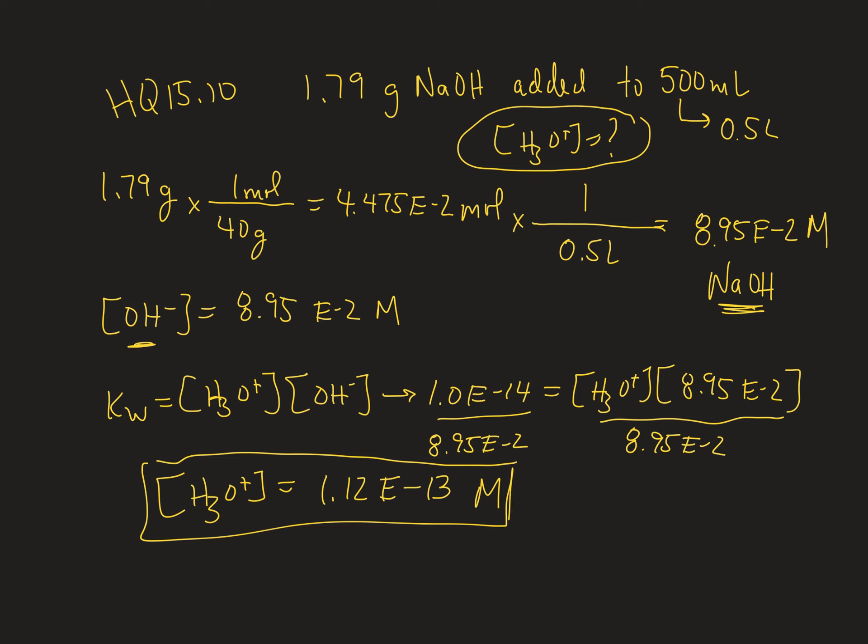You could have solved this problem a few different ways. The way I chose to solve it was using Kw equals hydronium times hydroxide. We could have found pOH to then find pH and then use 10 to the negative pH. That would have been a little bit more involved.